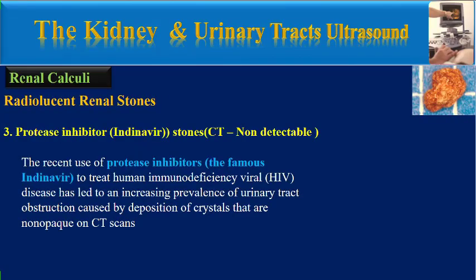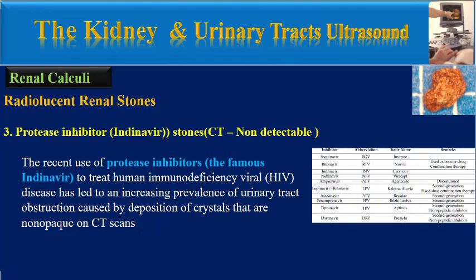The second group of radiolucent renal stones which are CT non-detectable includes, first, protease inhibitor stones or indinavir stones. The recent use of protease inhibitors, the most famous of which is indinavir, to treat human immunodeficiency virus disease has led to an increasing prevalence of urinary tract obstruction caused by deposition of crystals that are non-opaque on CT scan.